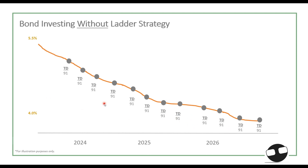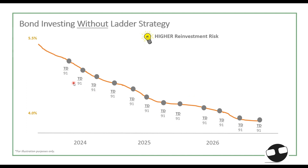Looking at this illustration, we have a 91-day time deposit — TD stands for time deposit or any money market instrument. This shows the investment strategy without the ladder. When the first 91-day TD matures, the second time deposit may have a lower interest rate than the first one — that's reinvestment risk. We discourage this kind of strategy in a decreasing interest rate environment.